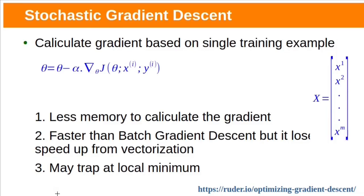To overcome these problems, another variant — stochastic gradient descent — was proposed. This is the same as basic gradient descent except it calculates the gradient based on a single training example. This is the parameter updation rule — for each training example it will update the parameters. The gradient calculation is based on a single training example, so it requires less memory to calculate the gradient compared to basic gradient descent. However, in basic gradient descent, processing all training examples uses vectorization, but in stochastic gradient descent it processes each training example one at a time, losing the speed-up from vectorization. If the error surface is non-convex it may also trap at a local minimum.